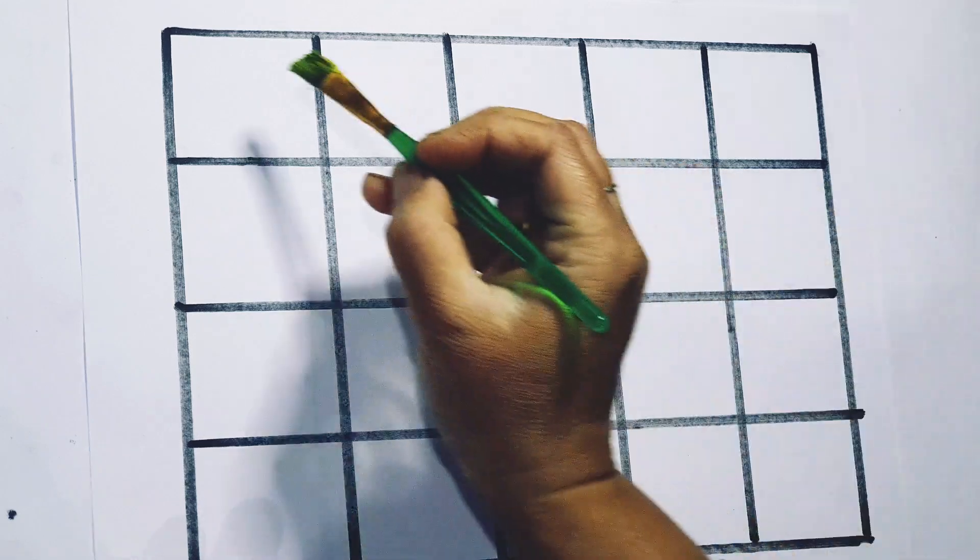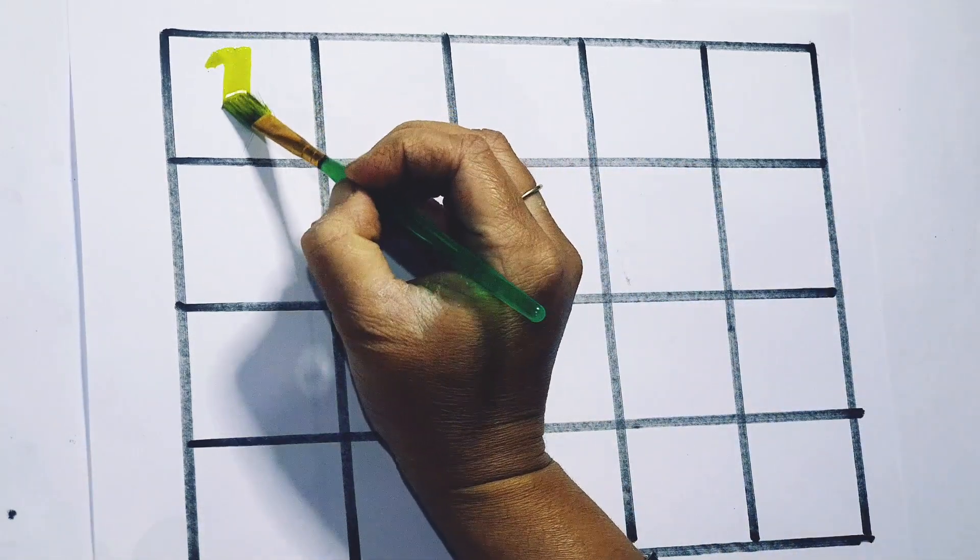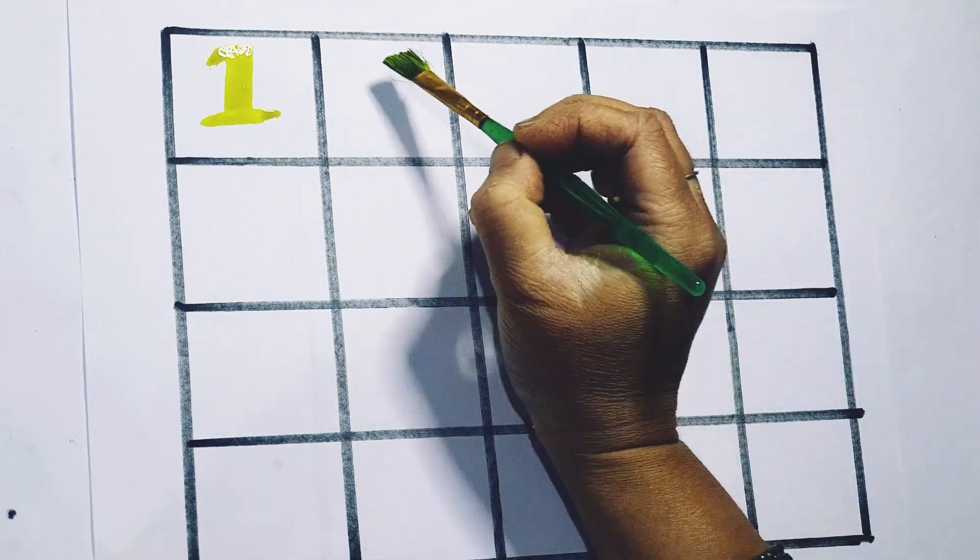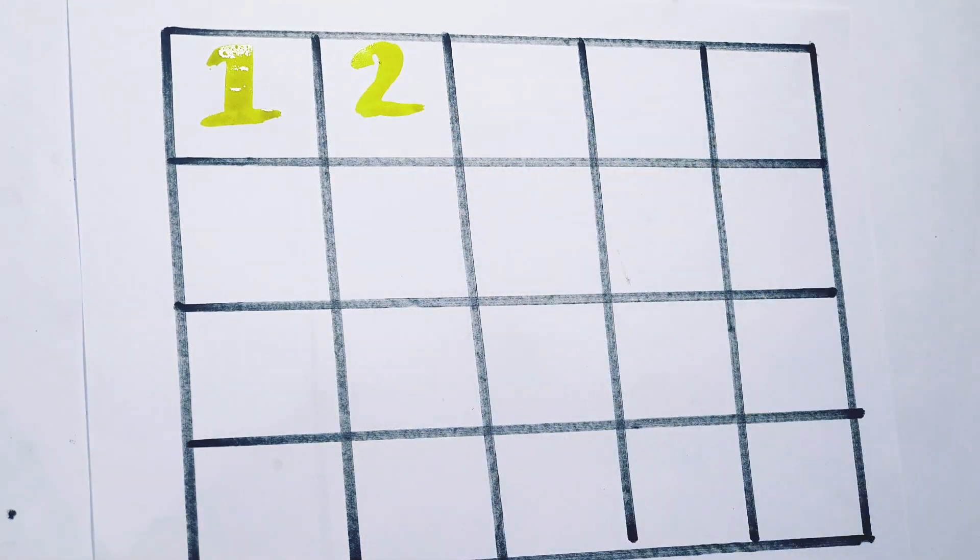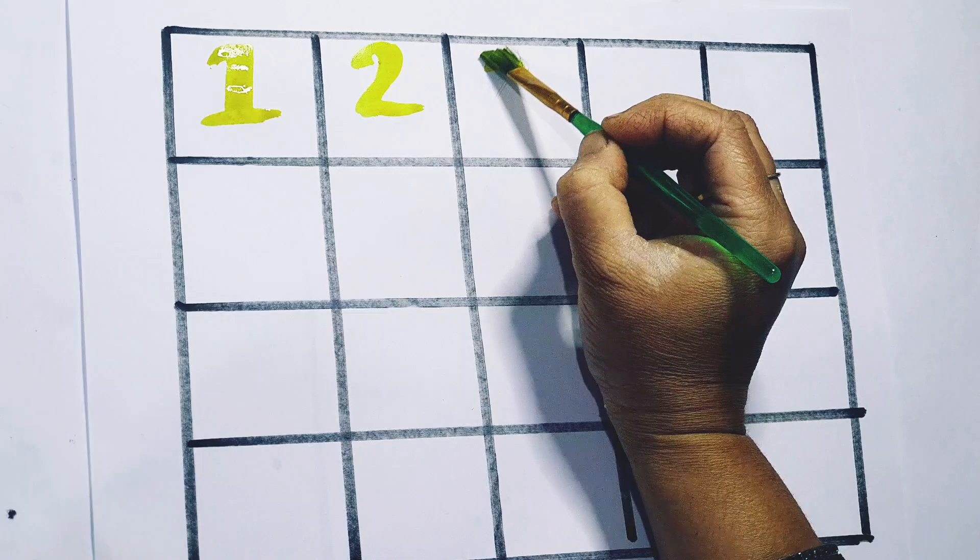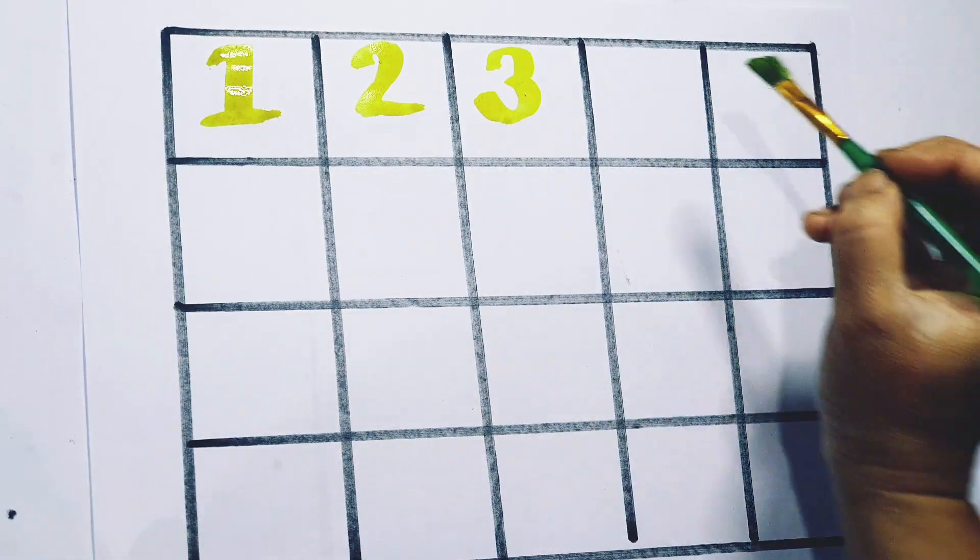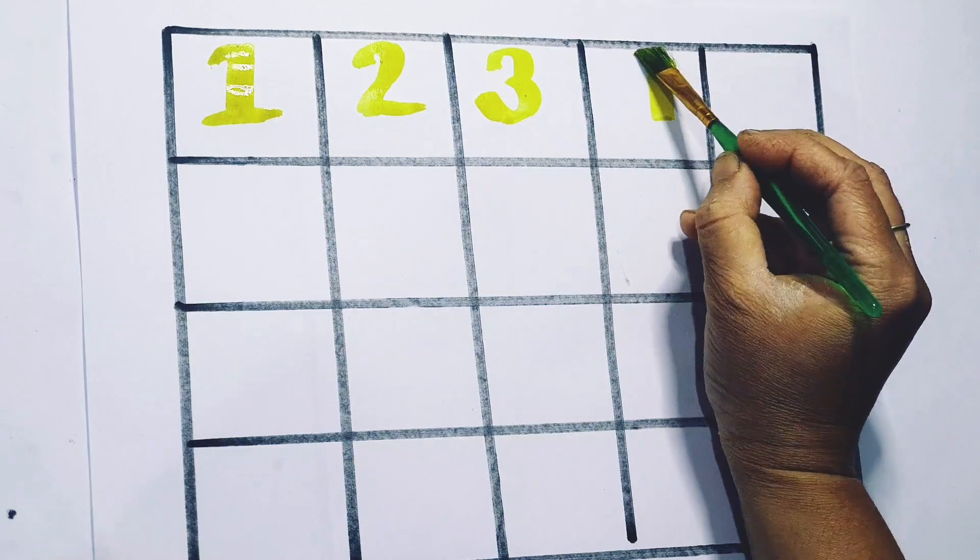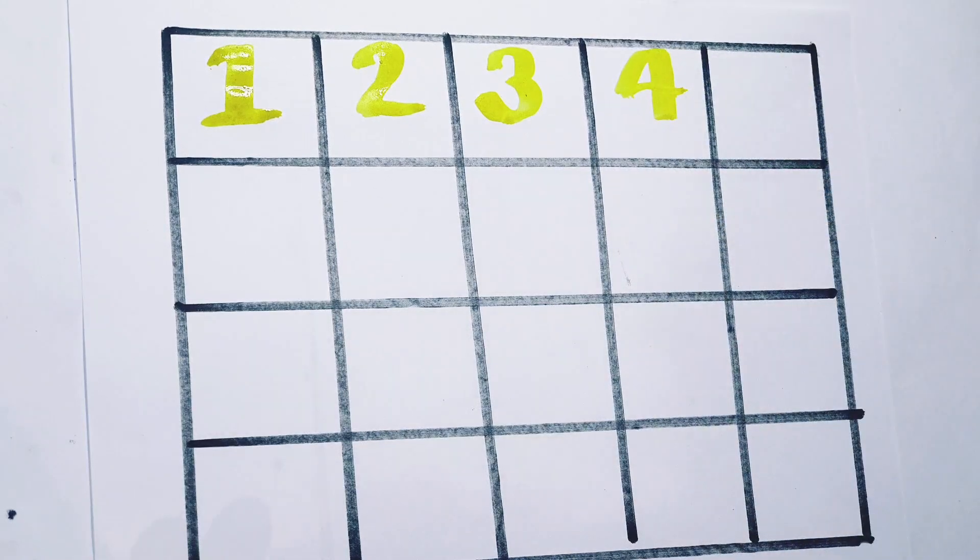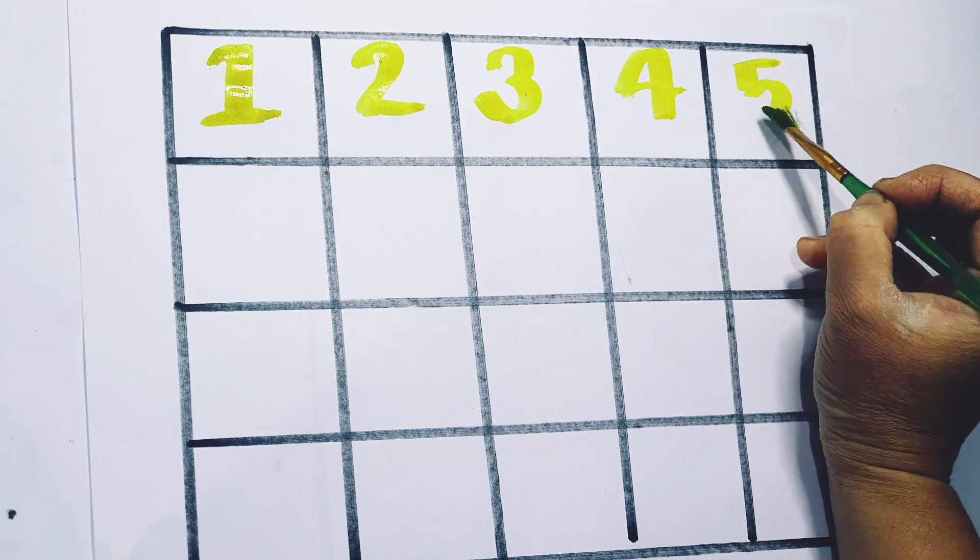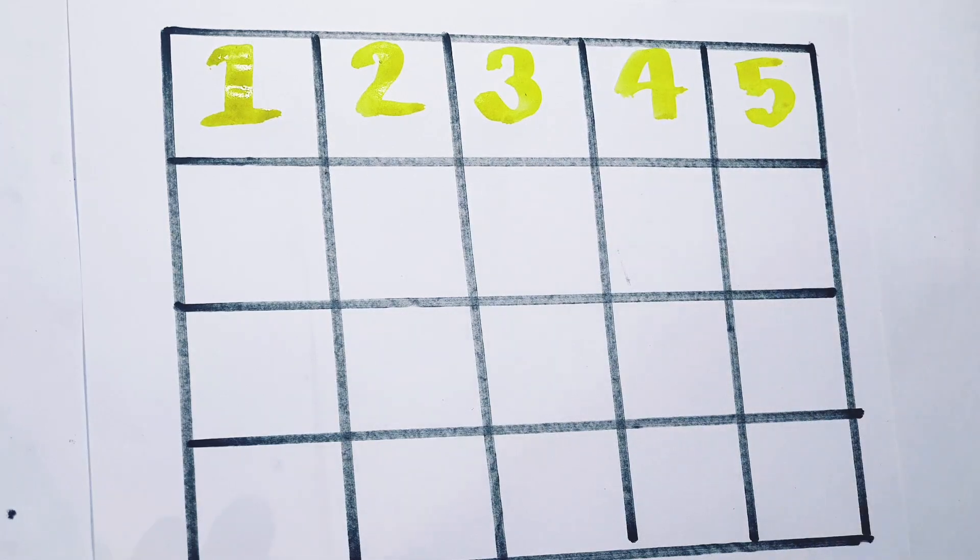Yellow color. 1, one. 2, two. 3, three. 4, four. 5, five. Sky blue color.